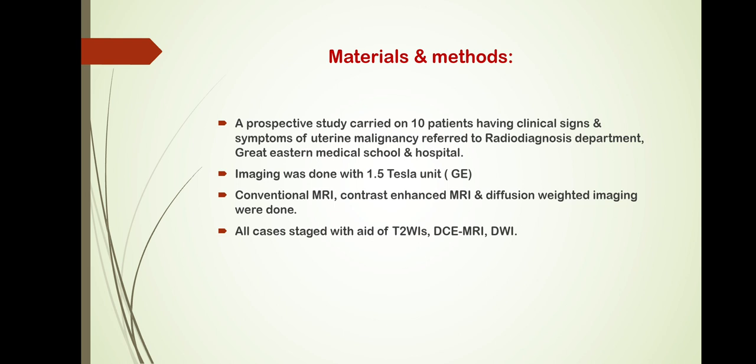Materials and methods: this is a prospective study carried on 10 patients having clinical signs and symptoms of uterine malignancy, referred to the radio diagnosis department in Great Eastern Medical School and Hospital. Imaging was done with a 1.5 Tesla unit GE machine. Conventional MRI, contrast-enhanced MRI, and diffusion-weighted imaging were done. All cases were staged with the aid of T2-weighted imaging, dynamic contrast imaging, and diffusion-weighted imaging.